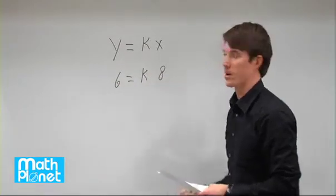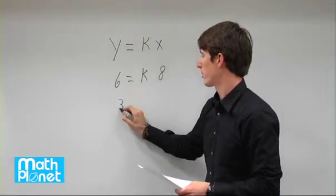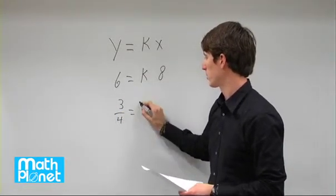So we can find the proportionality constant like this. It's just 6 divided by 8 at this point. So 6 divided by 8 is 3 fourths equals k.